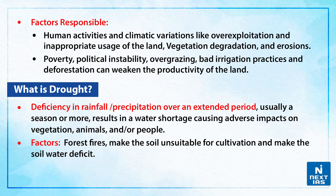We also have poverty and political instability, overgrazing, bad irrigation practices, and deforestation that can weaken the productivity of the land.